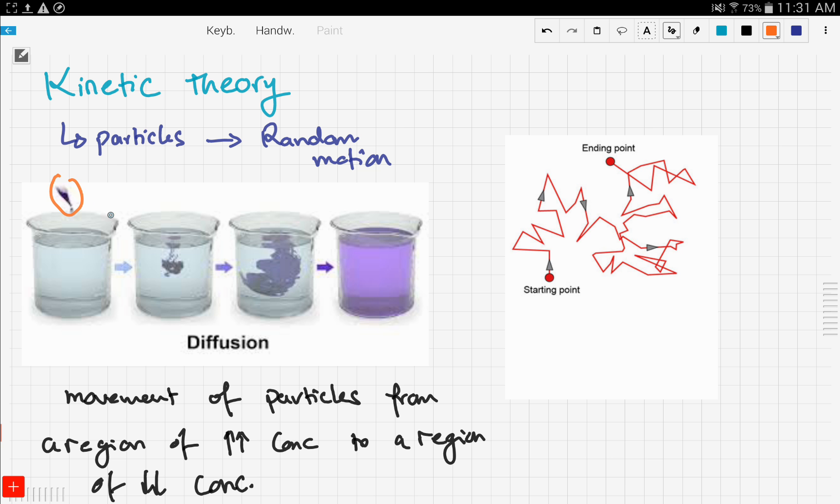The dye has a high concentration while the water has zero concentration of the dye. So that's why the dye diffuses into the water. It's a movement from a region of high concentration to a region of low concentration.